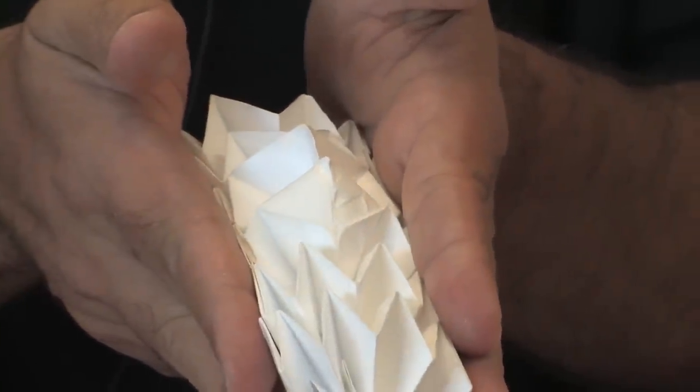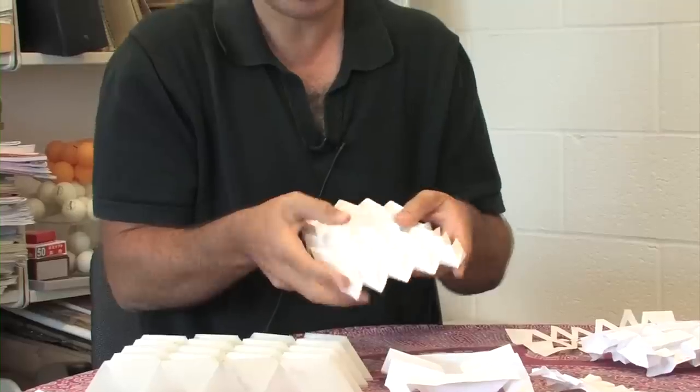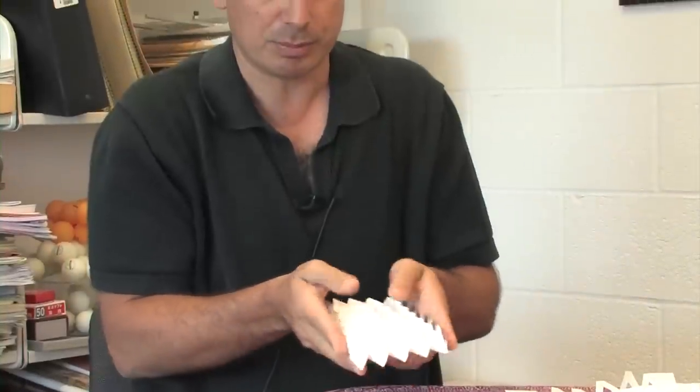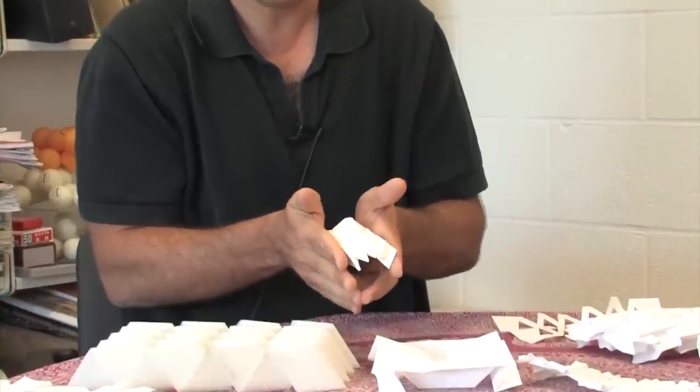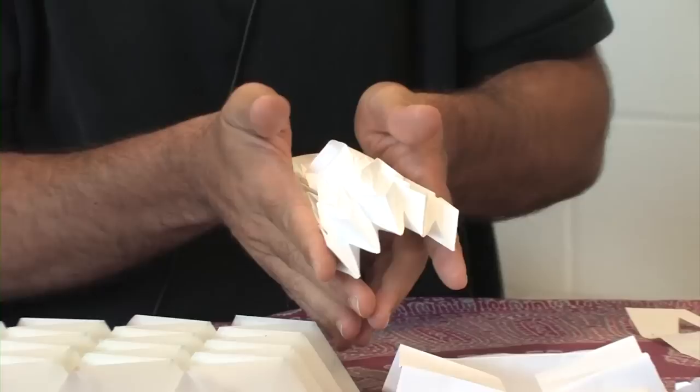But the amazing thing about this is that, whereas before, if I don't have the pop-through defect, I could fold the sheet pretty easily. When I do have that pop-through defect, that sheet cannot fold any further, it becomes stiffer.